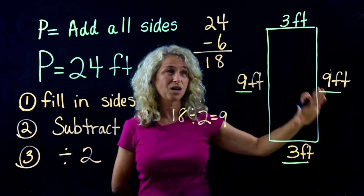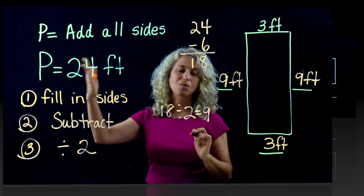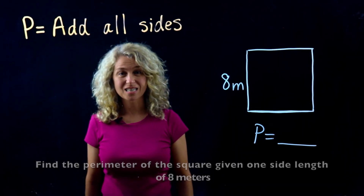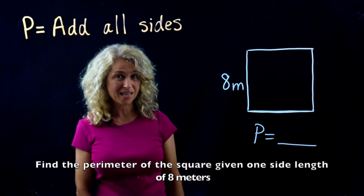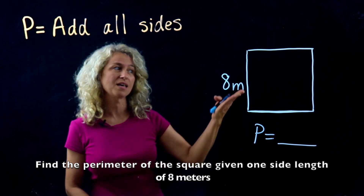12 plus 12 is 24, so we know we're correct. In this last example, we're given that the shape is a square. Remember, square shapes have all sides equal length.